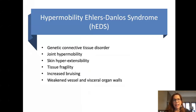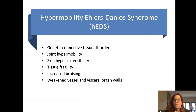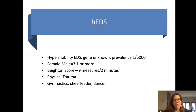Hypermobility type EDS is a heterogeneous connective tissue disorder. It encompasses joint hypermobility, which is a very common part of a patient's history, skin hyperextensibility, tissue fragility, usually a history of increased bruising, and weakened vessel and visceral organ walls. Basically, wherever connective tissue lies — which is all over the body — there can potentially be involvement. The gene of hypermobility type EDS, as opposed to some of the other subtypes of EDS, is unknown, but its prevalence has been reported to be one in 5,000.